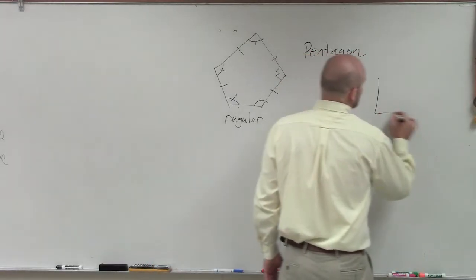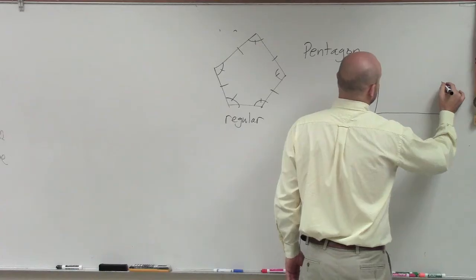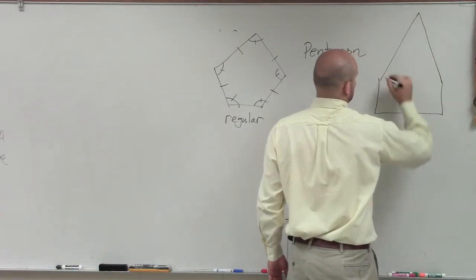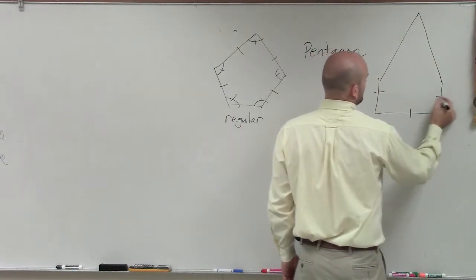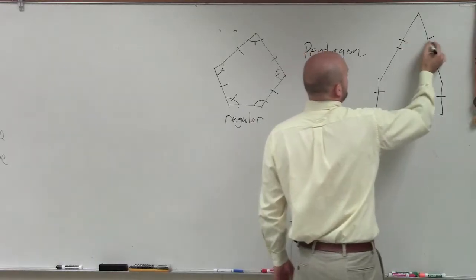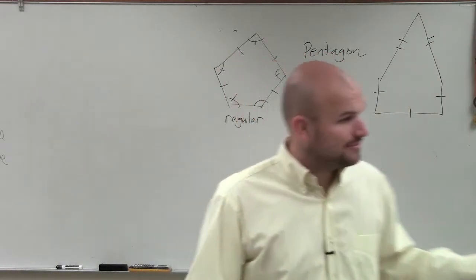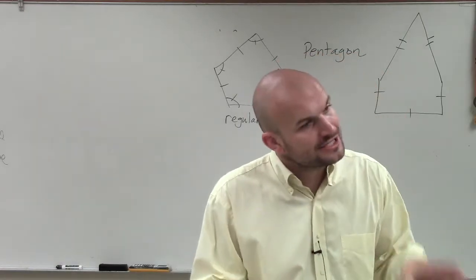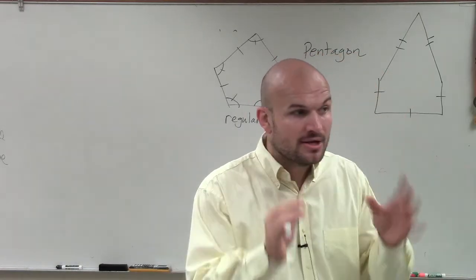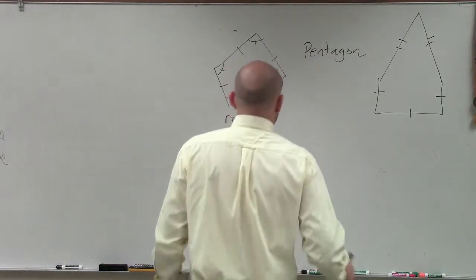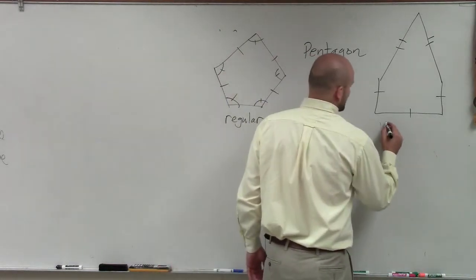Then here is an example of an irregular pentagon. Right? But you guys can see that the side lengths are not all the same. Right? So Zach, when you're looking at this and you're trying to determine what is the sum, there's two formulas we talked about. And these are what you guys need to do. So this is irregular.